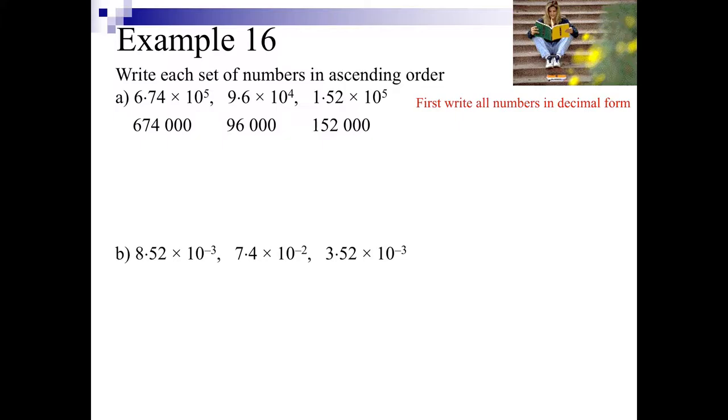So we can see very easily now what the numbers are and can place those in order. So the smallest number is 96,000, the next number is 152,000, and then our largest is 674,000.